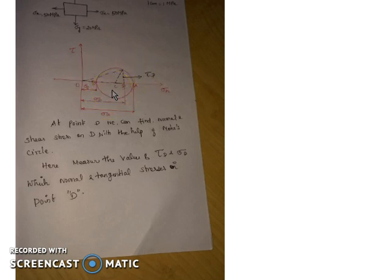To find the stresses at any point on the Mohr circle, take any point—for example, point D. Draw a perpendicular line, which represents the shear stress at D. From point O, sigma D represents the normal stress at this point. Draw the resultant stress. At point D, we can find both normal and shear stresses using the Mohr circle.